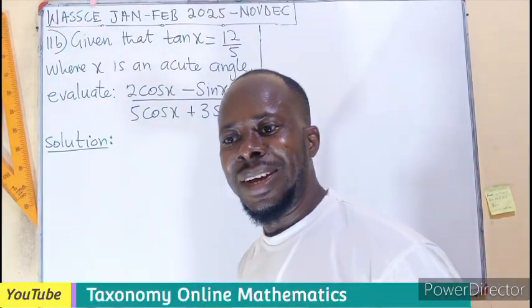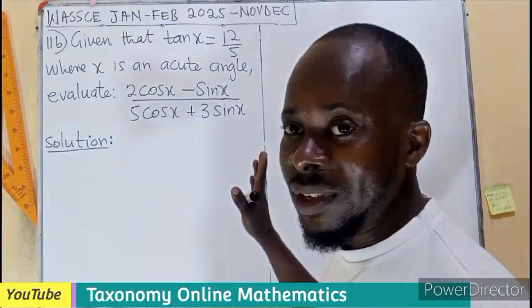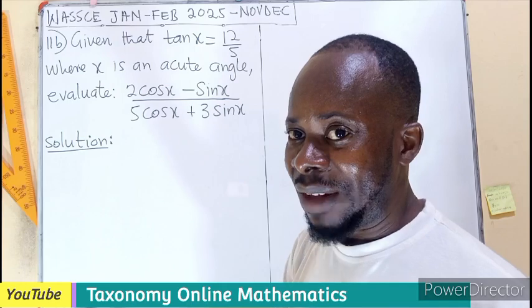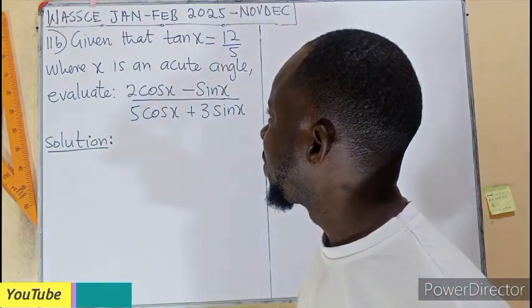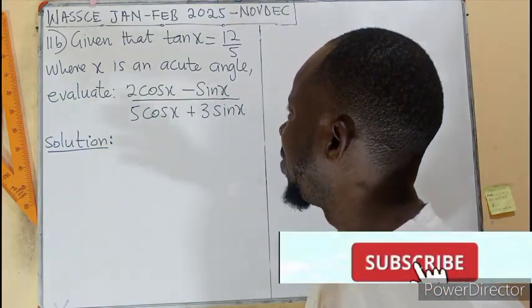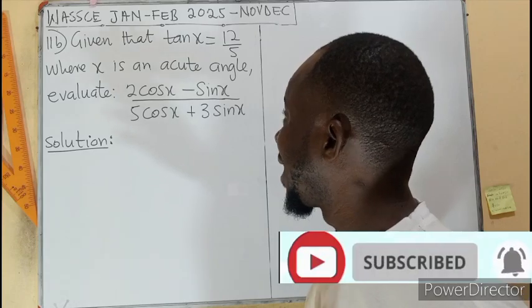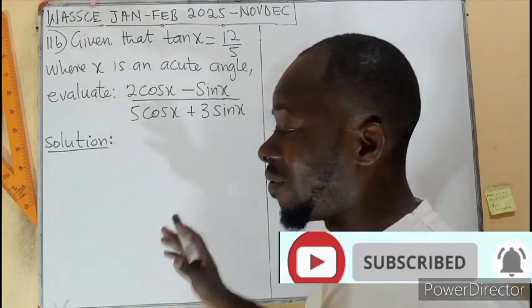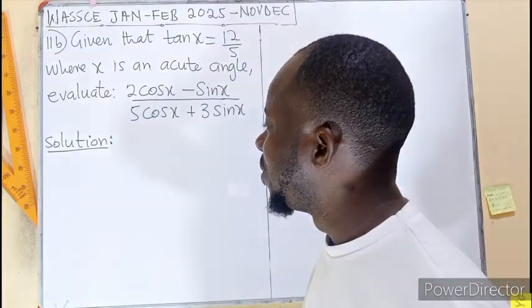Hello, welcome. Question 11B, WASSCE 2025, the January-February edition. Given that tan x is 12 on 5, where x is an acute angle, we have to evaluate these trigonometric functions.